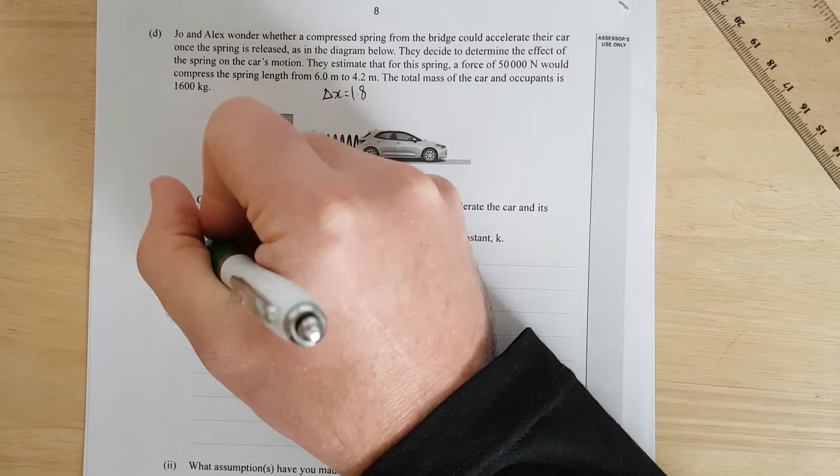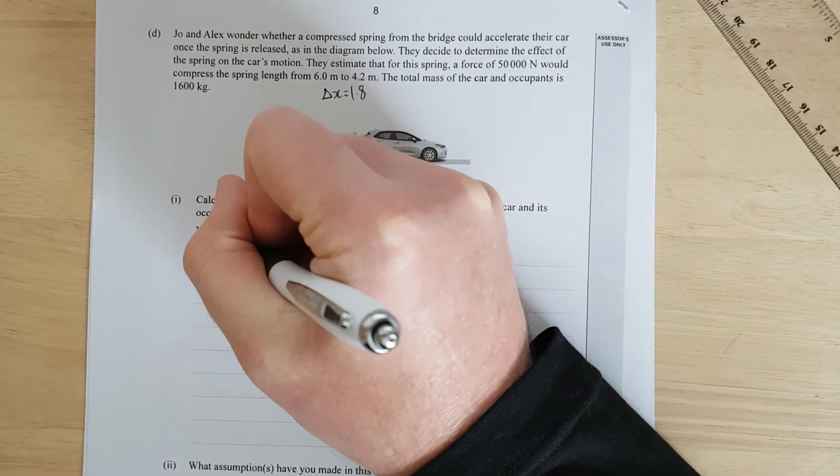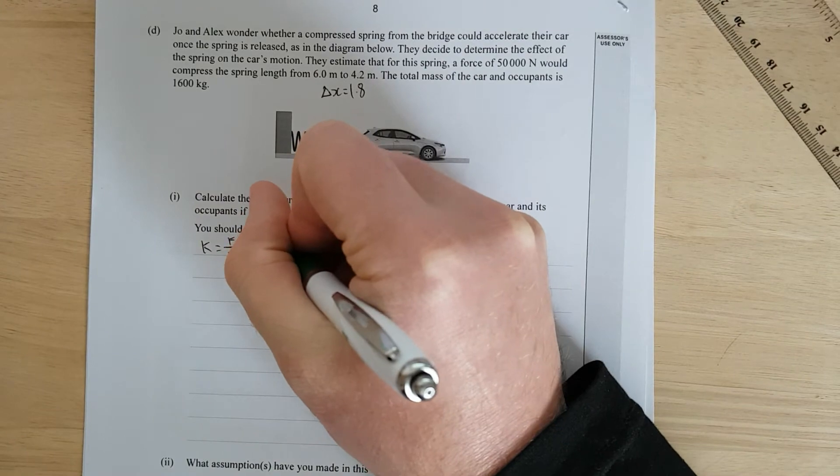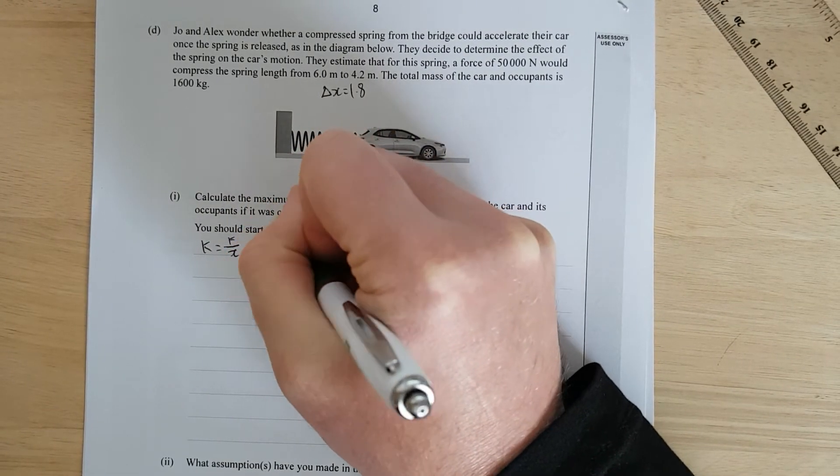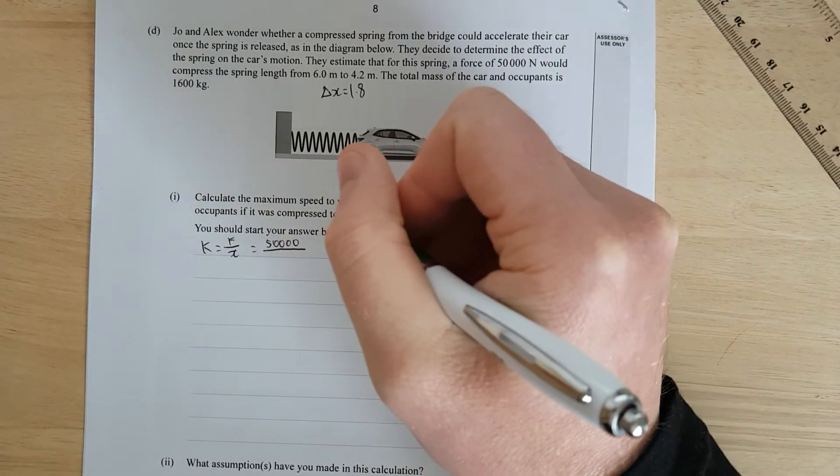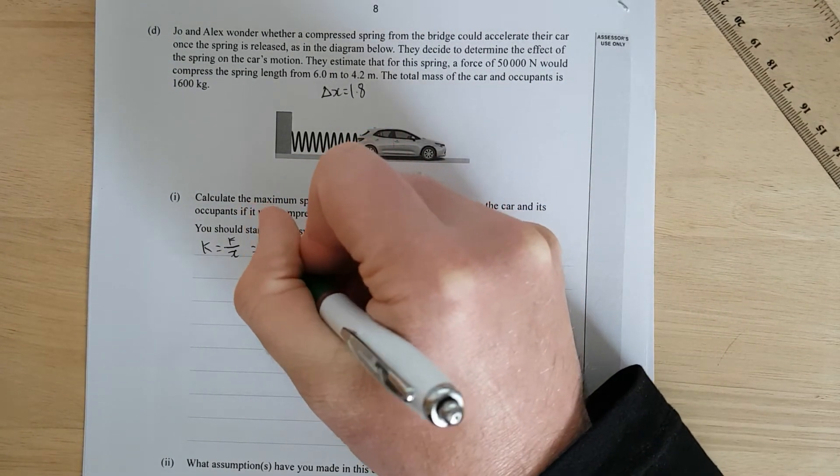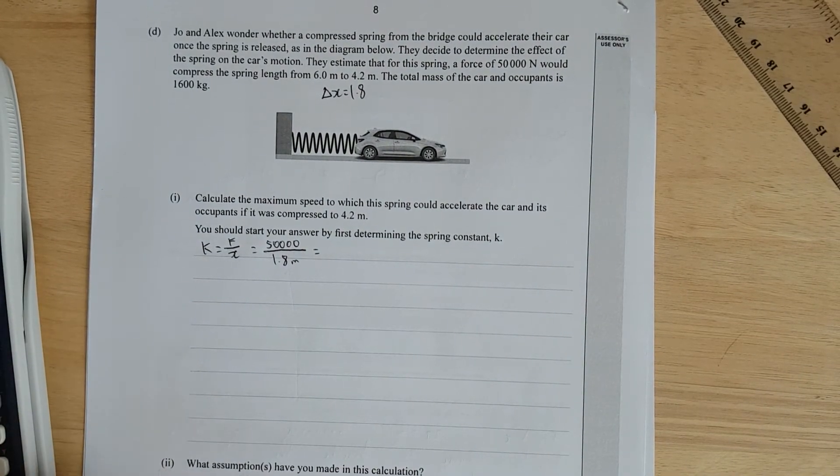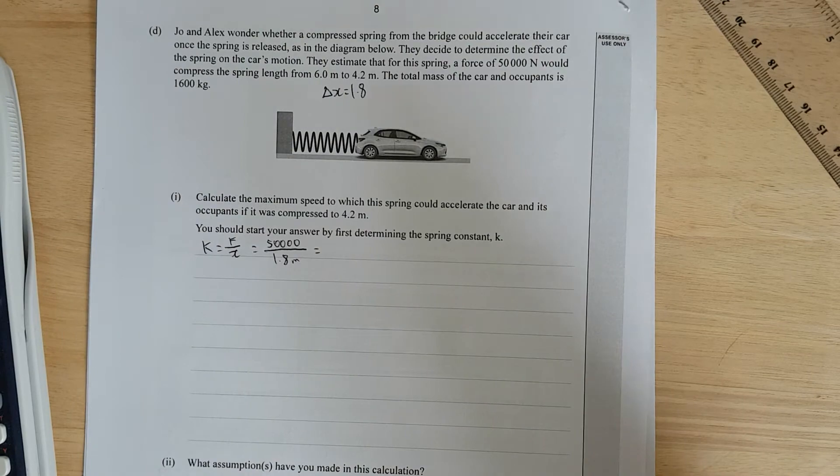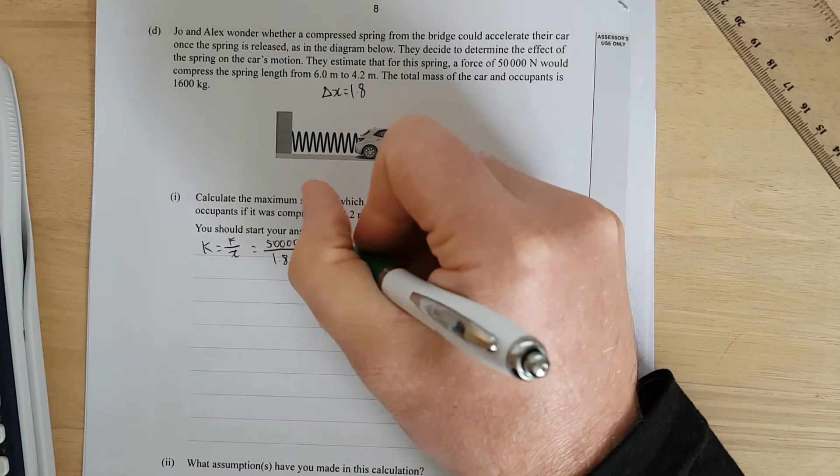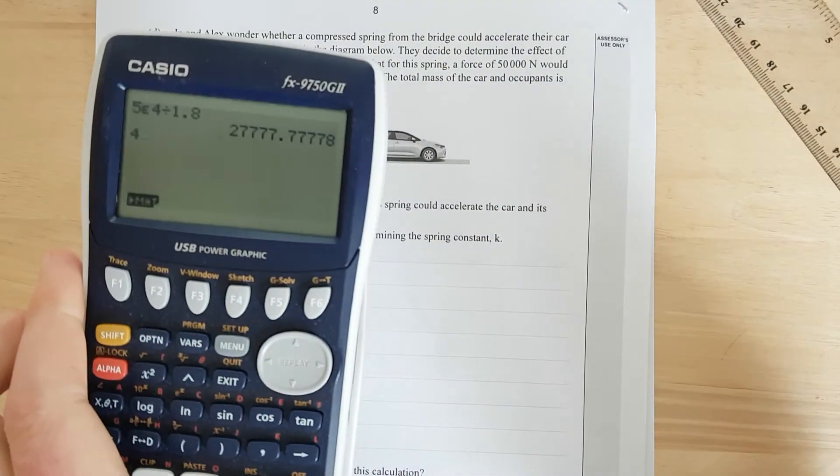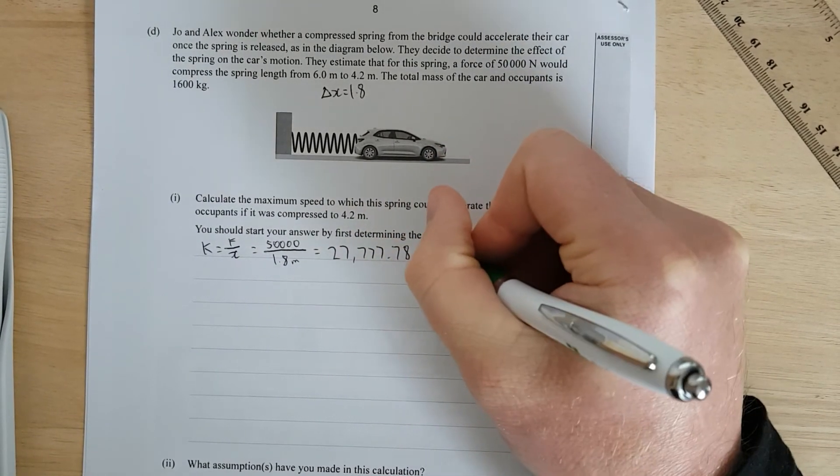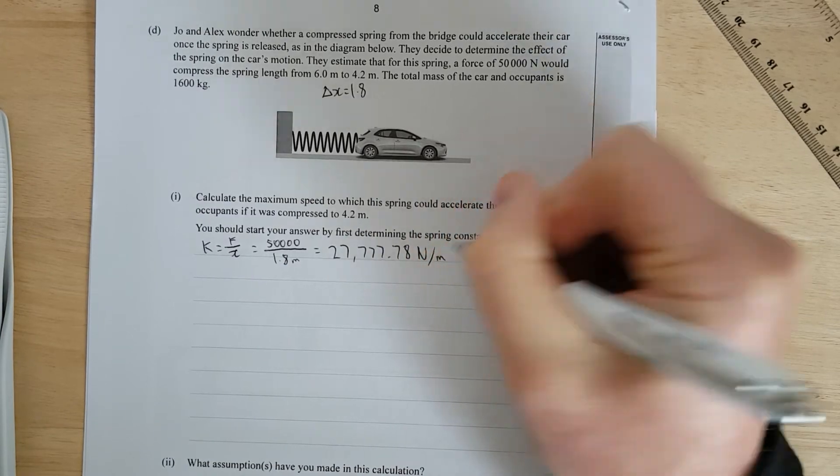Calculate the maximum speed to which the spring could accelerate the car and its occupants. If it was compressed to 4.2, you should start by first determining the spring constant K. So we're going to have spring constant K, which is F over X. They reckon 50,000 newtons, so 50,000 divided by the compression of 1.8 meters. And that is going to equal 27,777.78 newtons per meter.